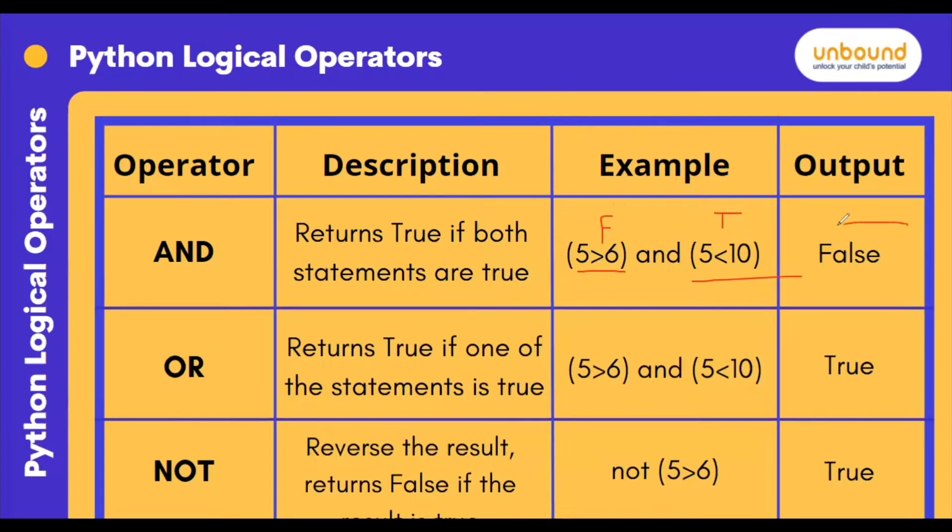But the output we are getting is false. Why? Because it says it returns true if both statements are true. If one of the statements also got false, then it will give the output as false, not true.